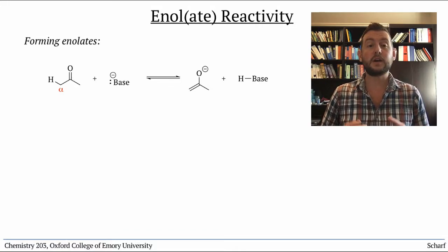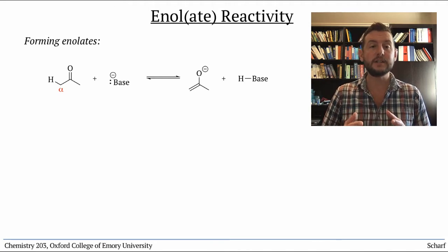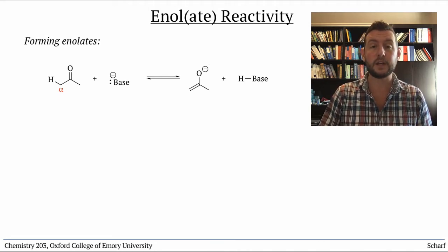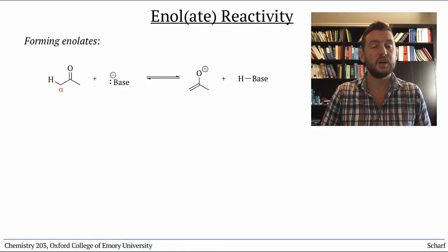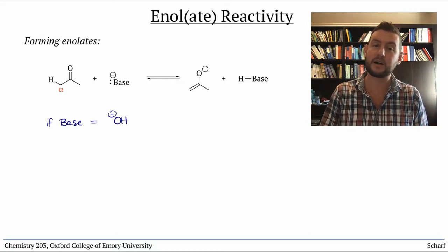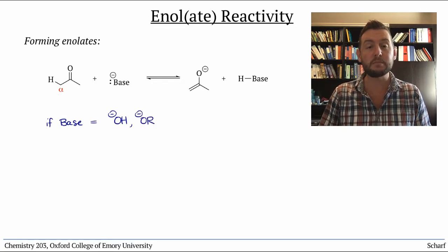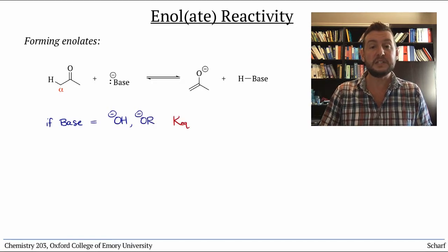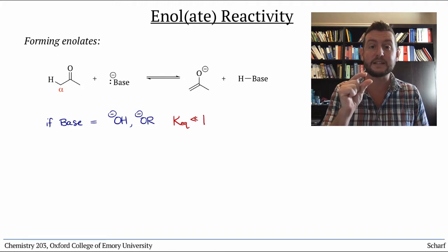In the last video, we saw that carbonyl compounds that have alpha protons can be converted into enolates by deprotonation with a base. With standard, run-of-the-mill bases like hydroxide or alkoxides, most carbonyl compounds are only deprotonated to a small extent at equilibrium.